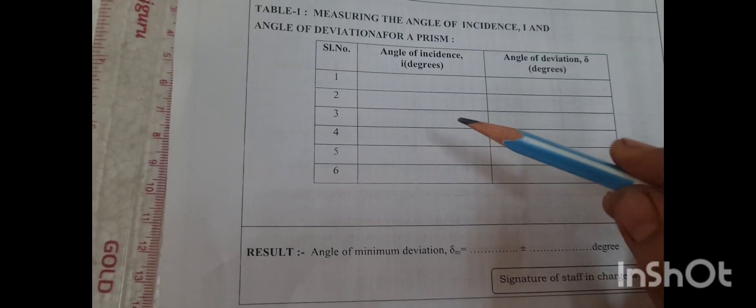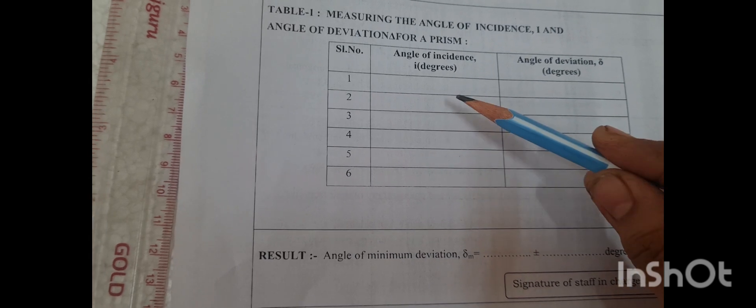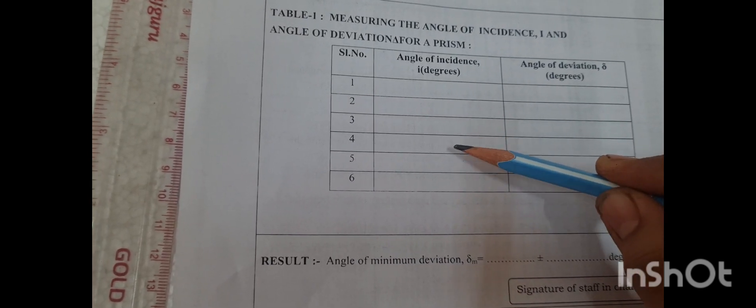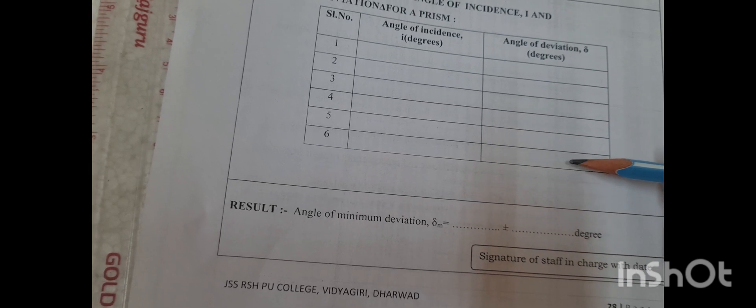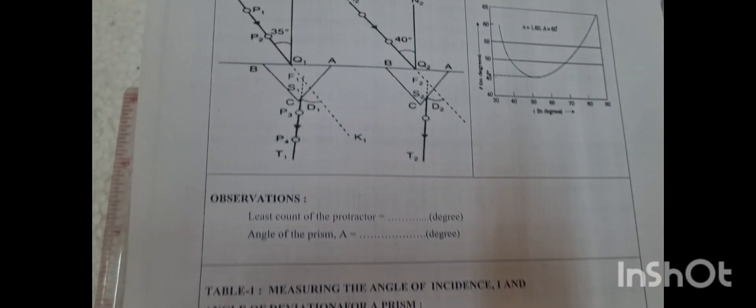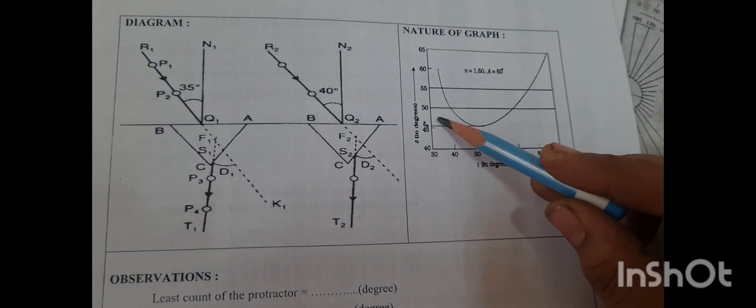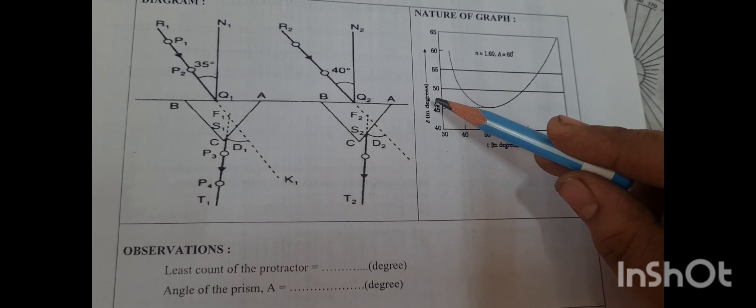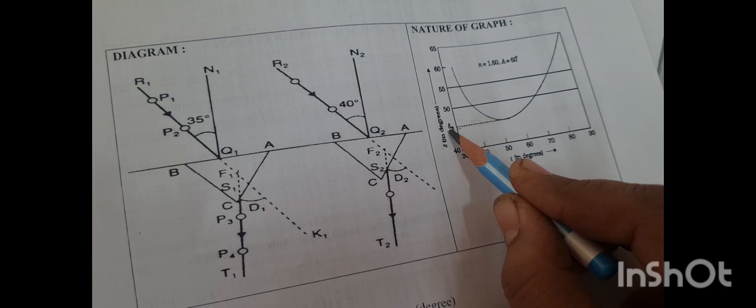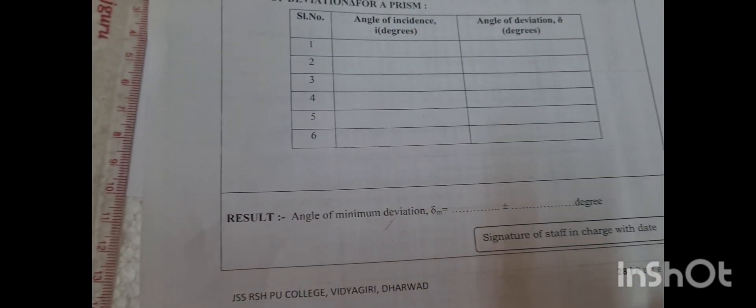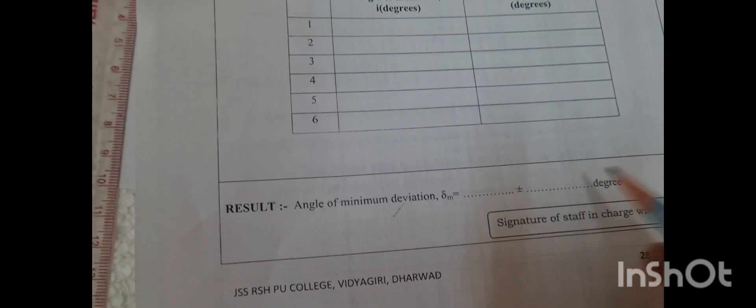The same experiment should be performed for different values of I: 35, 40, 45, 50, 55, and get the angle of deviation. By plotting the graph of I versus delta, angle of incidence versus the deviation, the minimum value is considered as angle of minimum deviation and the same value you have to enter in the result.